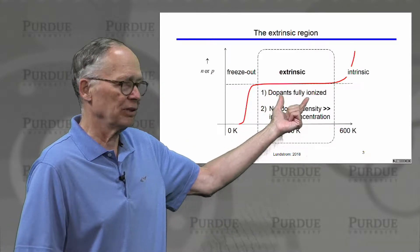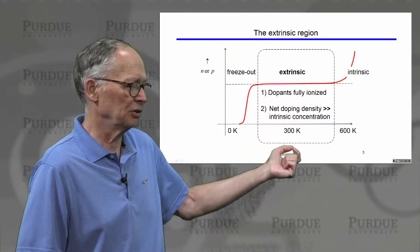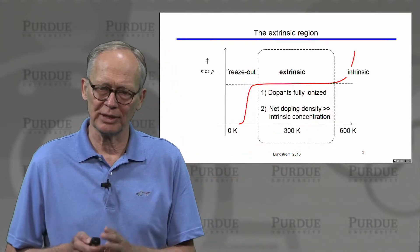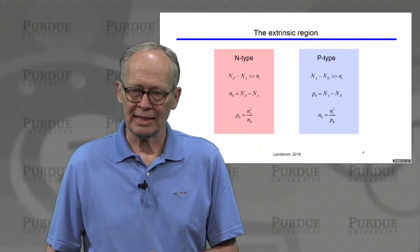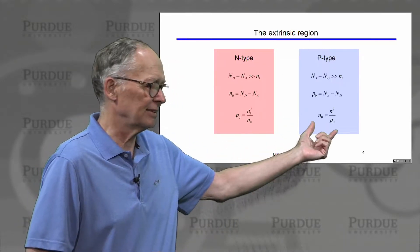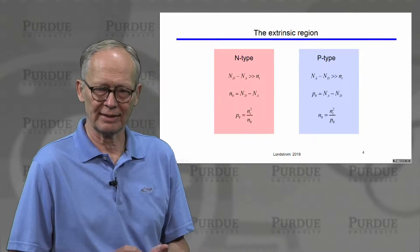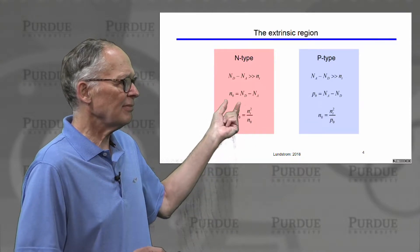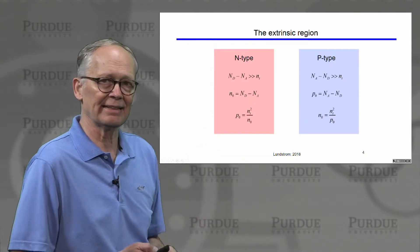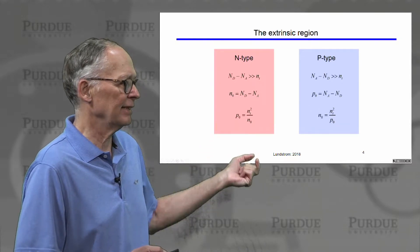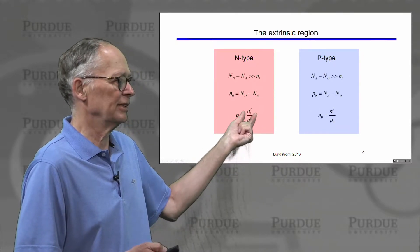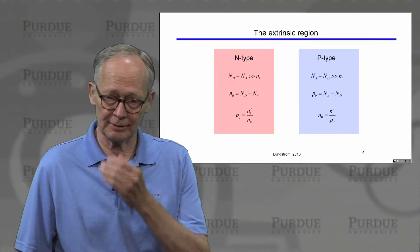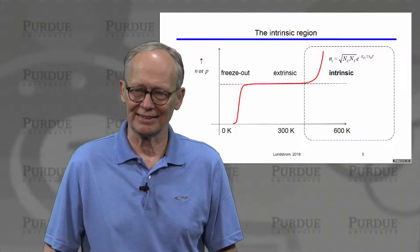In the extrinsic region, the dopants are fully ionized — the temperature is sufficient to do that — and the net doping density overwhelms the intrinsic carriers, so we don't need to worry about them. Under those conditions, it's very simple to calculate the electron and hole densities. The electron density equals the net n-type doping density, and the hole concentration is ni² over the electron concentration. Something very similar happens for p-type semiconductors.